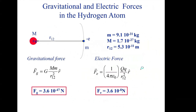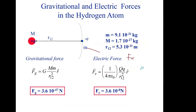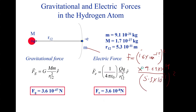So F is equal to (1.6 × 10⁻¹⁹)² and our value of k is 9.0 × 10⁹. The distance between electron and proton in hydrogen is 5.3 times 10 to the power of minus 11 meters, put as r squared. For the gravitational force, the masses and distance of separation are substituted to obtain the gravitational force.